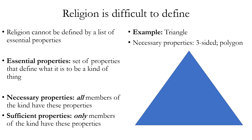Both properties — three-sided and polygon — are necessary conditions for being a triangle. Neither one is sufficient on its own: if you're just a polygon you might not be a triangle, and even if you're three-sided, if the sides are curvy, you would not be a triangle. Together, however, those two necessary properties are jointly sufficient for being a triangle. A sufficient property is one where, if you have it, that's enough — it suffices for being a member of a kind of thing. Not all of our concepts work like that.